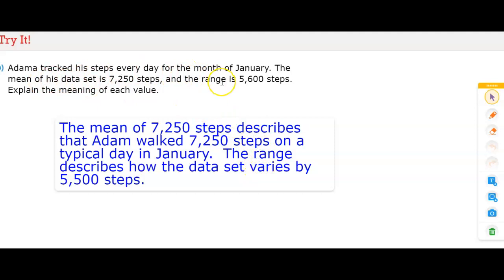That's the range because it can go from anywhere between the two numbers. That's why it says varies. That is what you would have to write as an explanation of both mean and range in this situation.